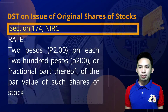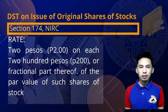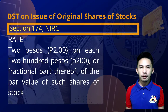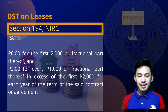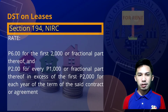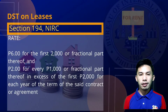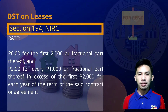For every original issue of shares of stock by any association, company, or corporation, there shall be collected a DST of 2 pesos for every 200 pesos or fractional part thereof of the par value of such shares of stock. On each lease contract or agreement, there shall be collected a DST of 6 pesos for the first 2,000 pesos or fractional part thereof, and an additional 2 pesos for each 1,000 pesos or fractional part thereof in excess of the first 2,000 pesos.